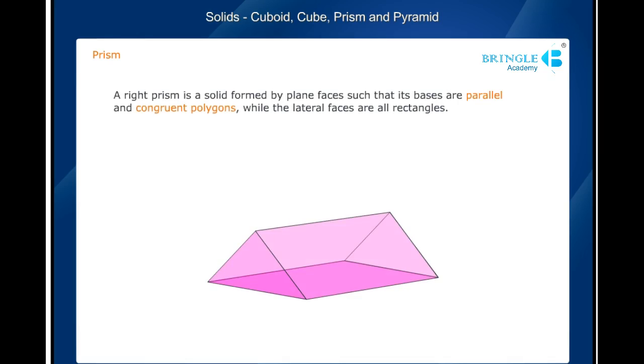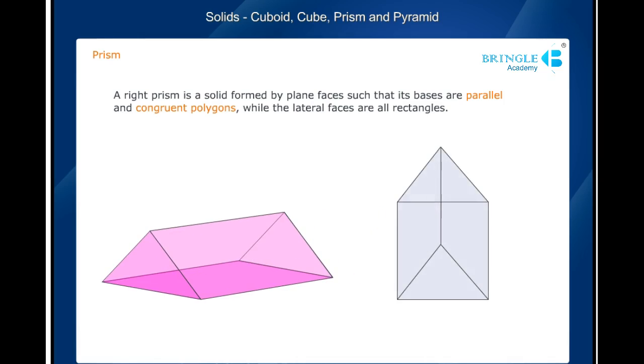A right prism is a solid formed by plane faces such that its bases are parallel and congruent polygons, while the lateral faces are all rectangles. The distance between the parallel bases is called the height of the right prism. A prism need not rest on its base. It may rest on a lateral face.